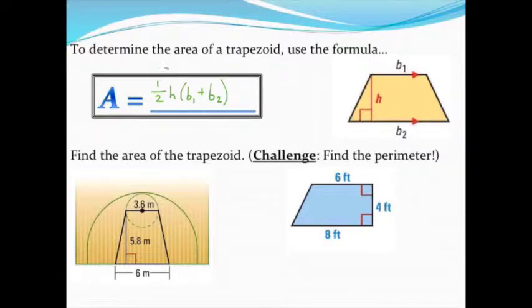To find the area of a trapezoid, we're going to use the formula: area equals one-half times the height times the sum of the two bases, b1 plus b2.